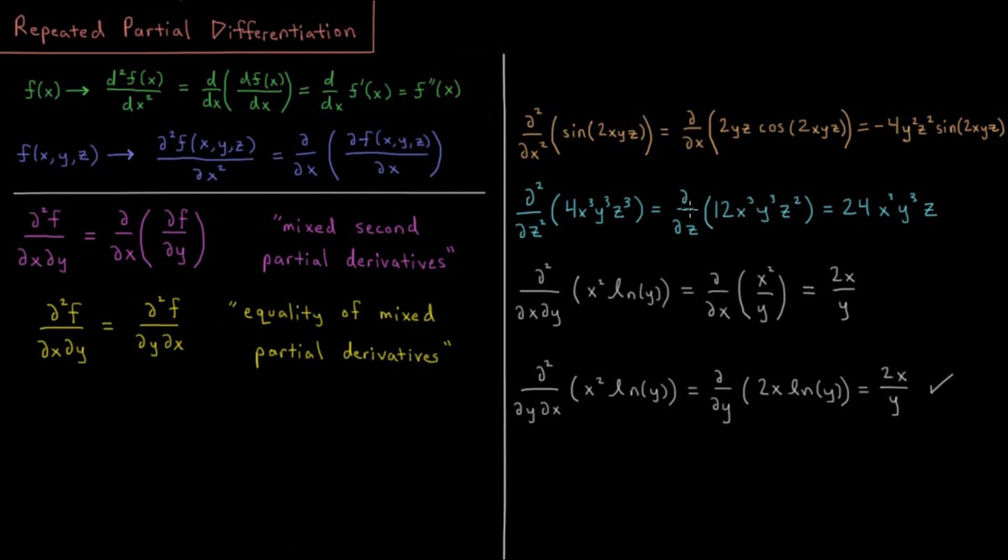Then we take the derivative again. Derivative of z² is 2 times z. So we get another factor of 2 times 12 gives us 24. Then just a z left over. And once again, the x³ and y³ are going to be constant.